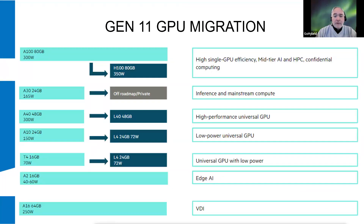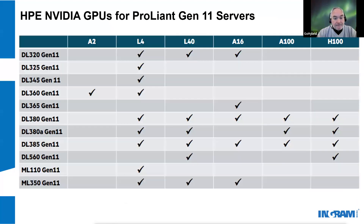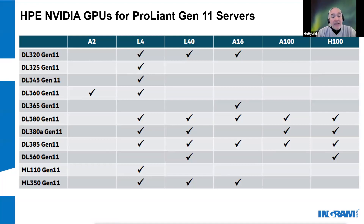For the new Gen 11 ProLiant servers from HPE, the new L4, L40, and H100 GPUs are offered for application environments where the Ampere GPUs were typically used on the Gen 10 and Gen 10 Plus servers. This chart gives you an idea of what new GPUs to recommend based on the previous Ampere GPU used and/or the application it's intended to support. This slide is a quick reference as to what A, L, and H series GPUs are supported in what new ProLiant Gen 11 servers. Keep in mind, additional GPUs may be qualified and added to the support list in the future.